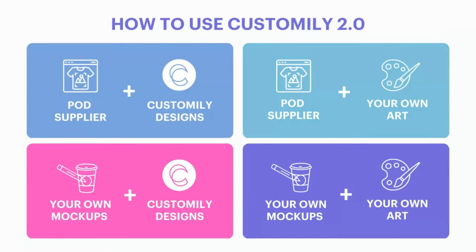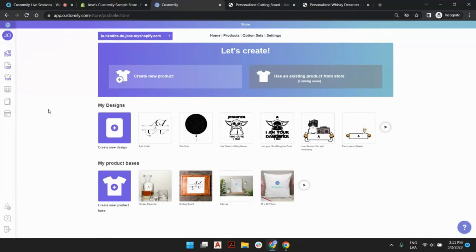For the first, second, and third paths, we have covered most examples in previous live sessions. Today I want to focus on the last path: creating our own mockups, our own product bases, and also creating our own art — combining them to create brand new products. Now that you have all these alternatives clear, let's create some products together using our product bases and our designs. Imagine I am a Shopify store owner who wants to start selling personalized products and has just installed Customily to try it out.